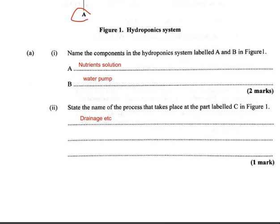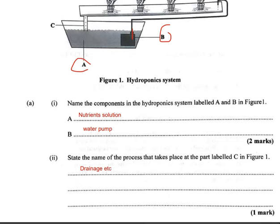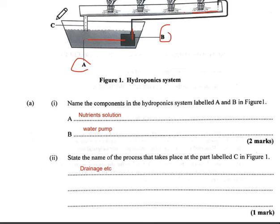Now it says: state the name of the process that takes place at the part labeled C in Figure 1. To explain the diagram — the nutrient solution is in the tank, the pump carries nutrients to the plants, and after the nutrients enter the plants, there is drainage where the waste product flows back to the drainage point. So label C would be the drainage — you can say drainage or drain, it's the same answer.